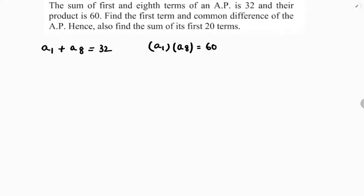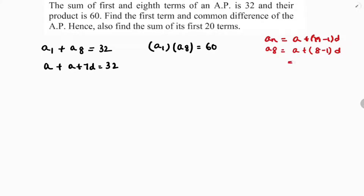The first term is 'a'. So the eighth term: using the nth term formula aₙ = a + (n−1)d, we get a₈ = a + (8−1)d = a + 7d. So the sum equation becomes: a + (a + 7d) = 32, which simplifies to 2a + 7d = 32. For the product equation: a × (a + 7d) = 60.